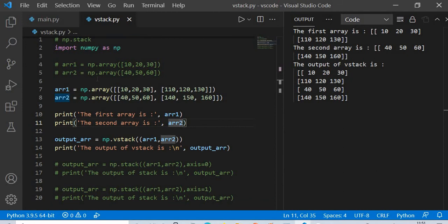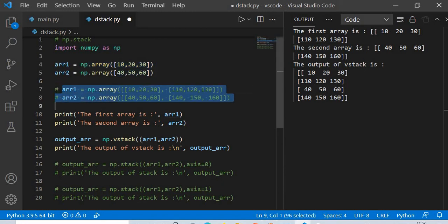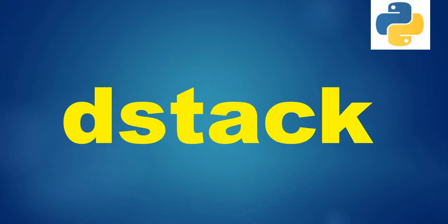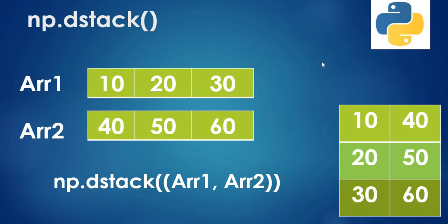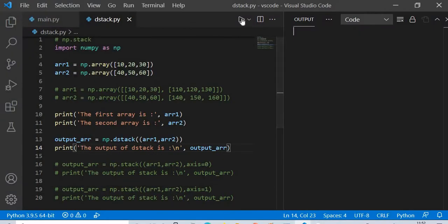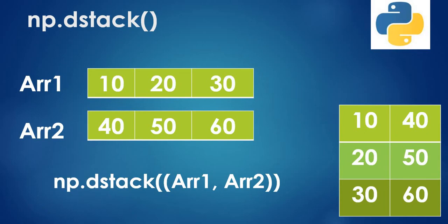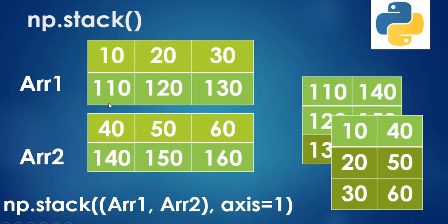Now we learn about dstack, the depth-wise stack. For a 1D case with arrays [10, 20, 30] and [40, 50, 60], applying dstack combines the first element of each array into the first row, the second elements into the second row, and so on — giving [[10, 40], [20, 50], [30, 60]]. Let's apply this in Python and verify the output.